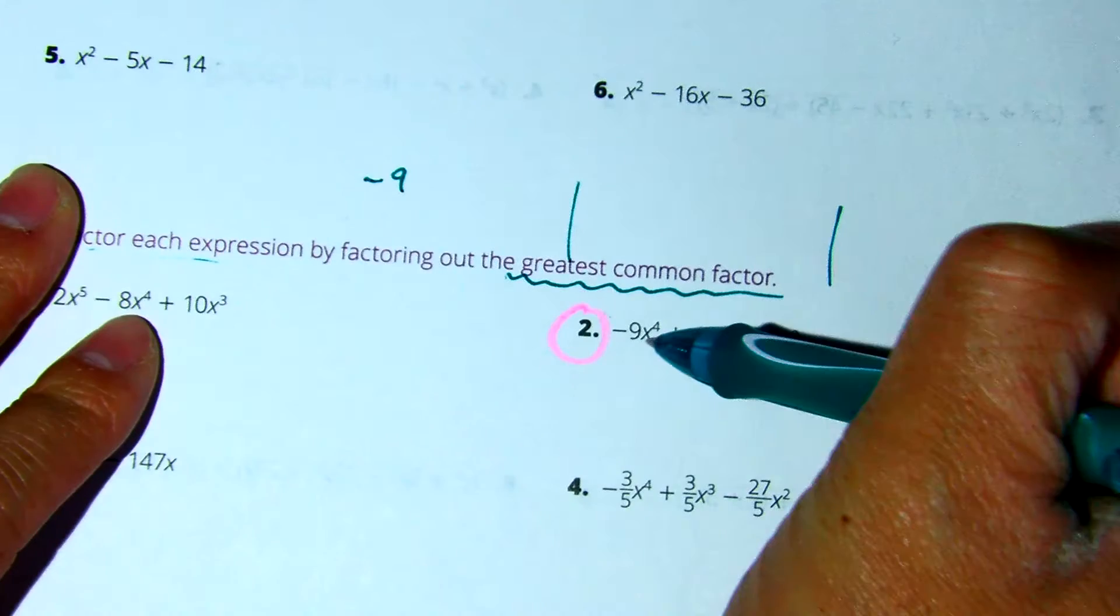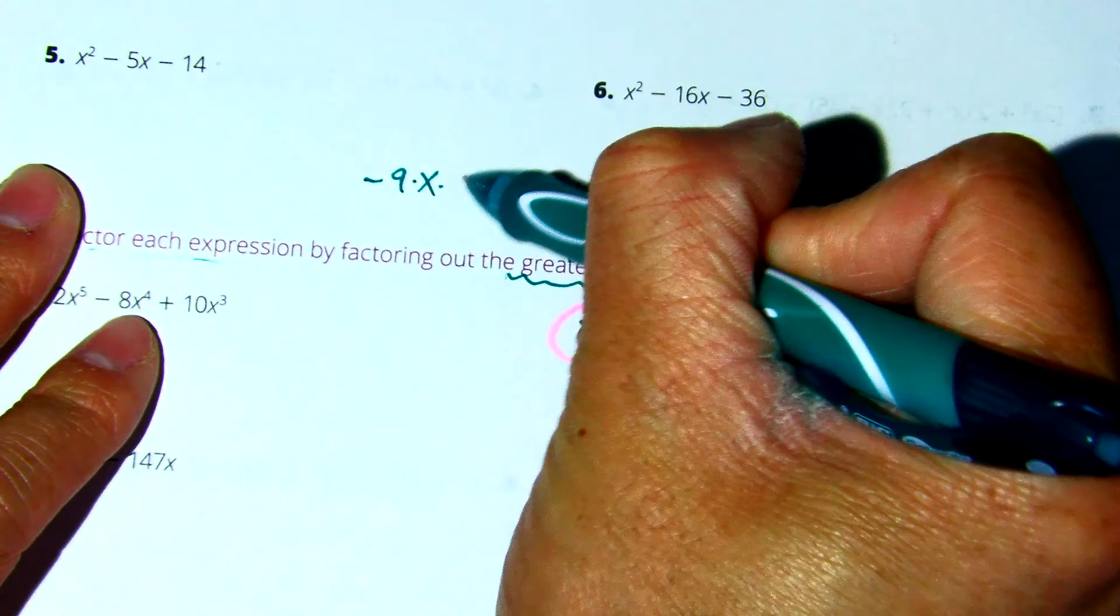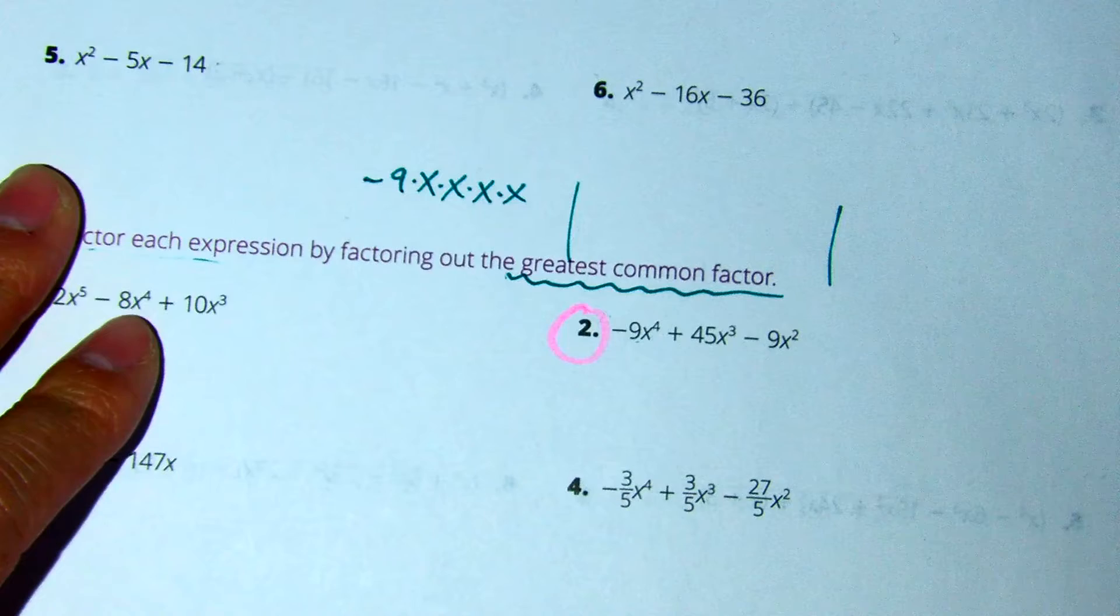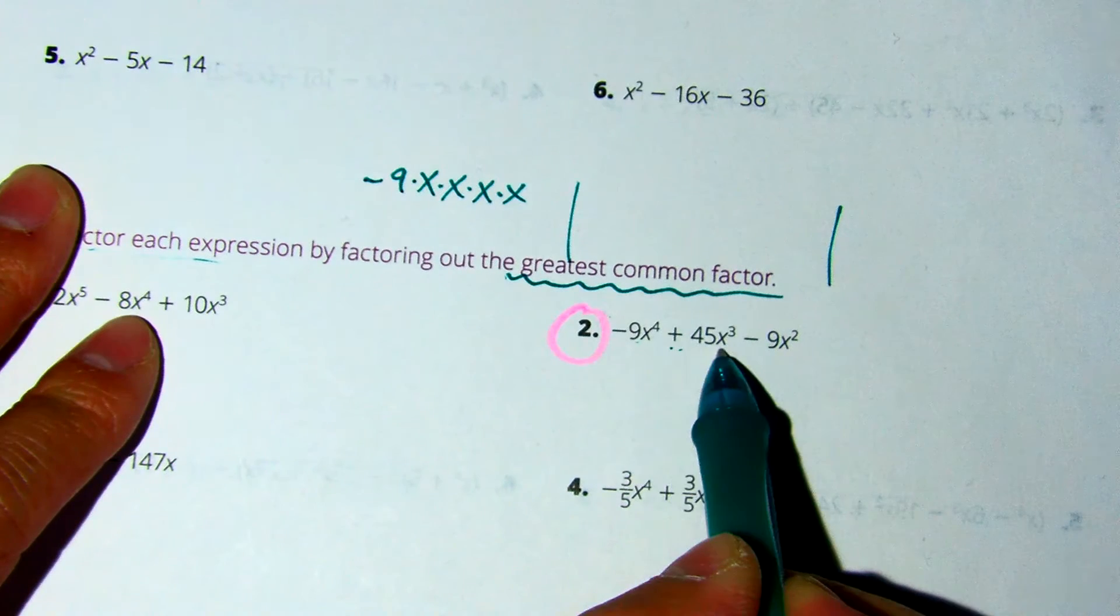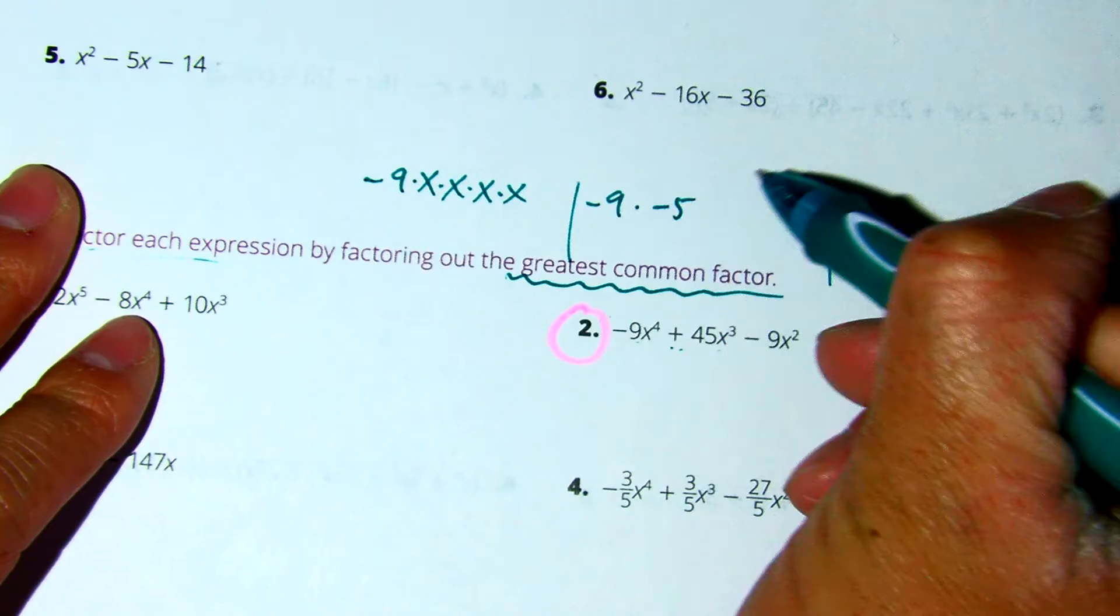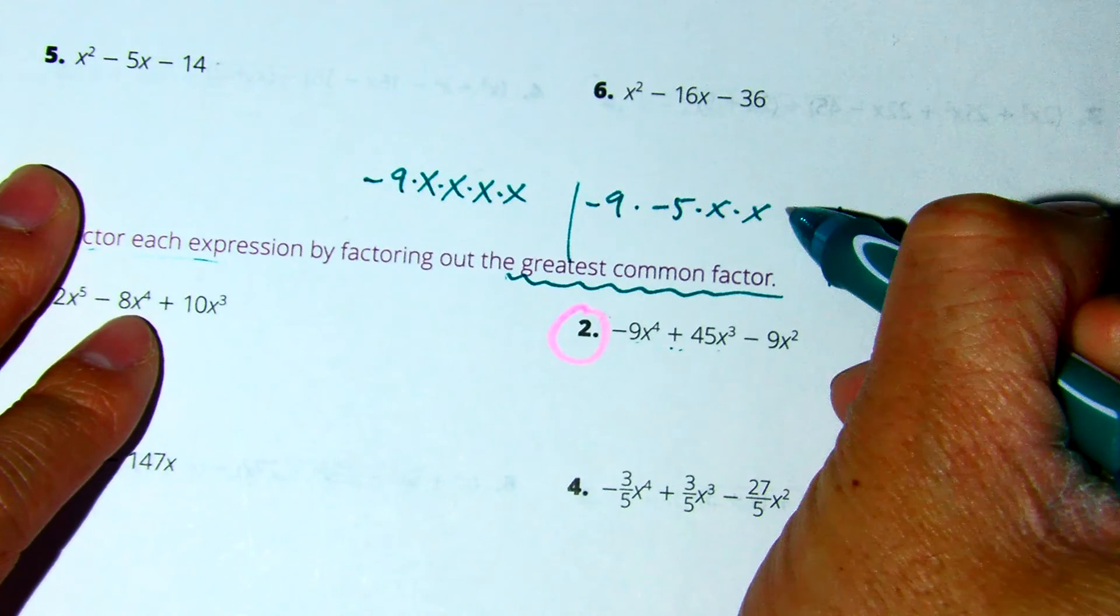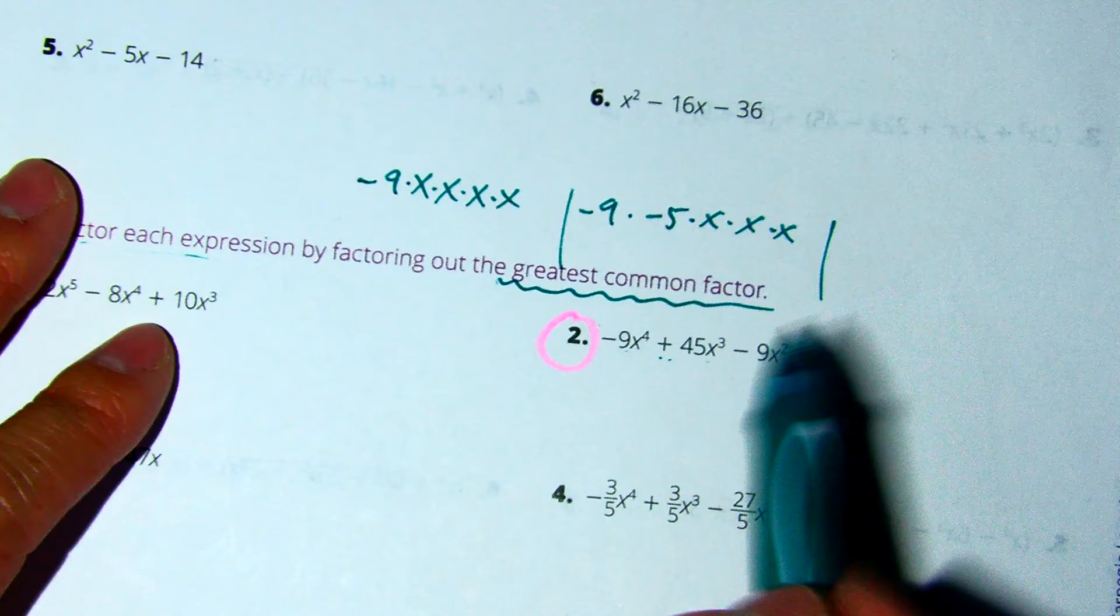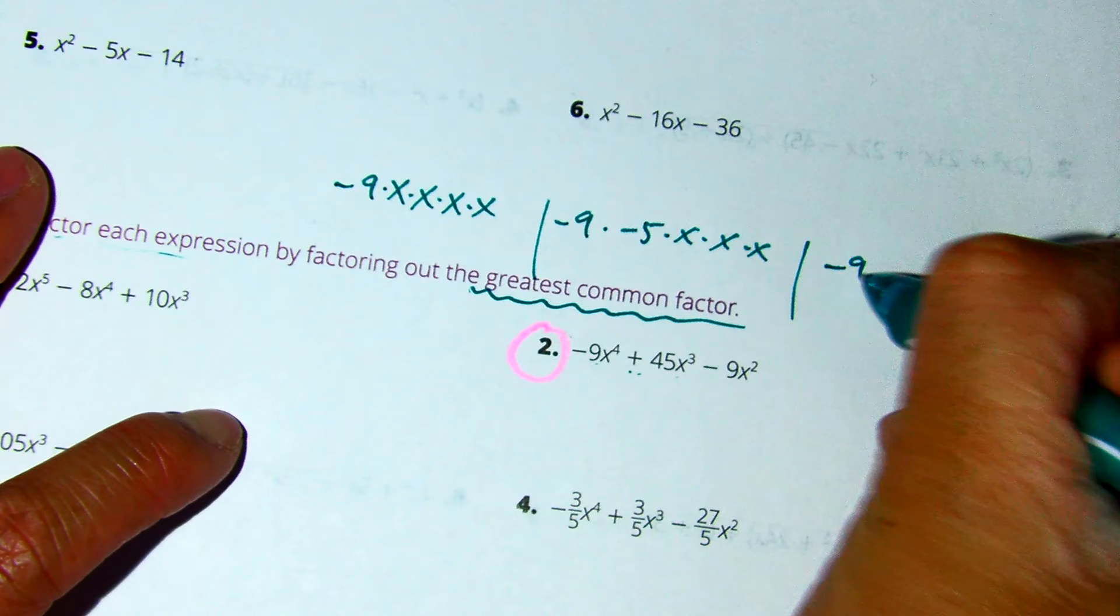Negative 9x to the 4th is negative 9 times x times x times x times x. 45x cubed is negative 9 times negative 5 times x times x times x. And negative 9x squared is negative 9 times x times x.